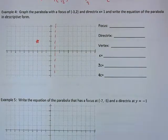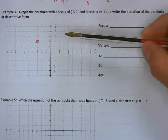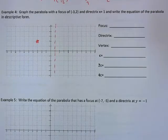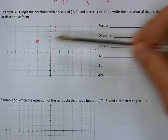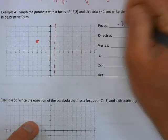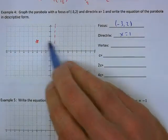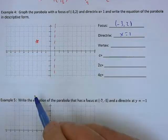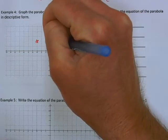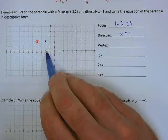From the focus and directrix, we can already tell the parabola opens to the left — it wraps around the focus and never touches the directrix. So it's an x = equation with a negative a value. The focus and directrix are 4 units apart, so the vertex is halfway between them, 2 units from each. That puts the vertex at (-1, 2).